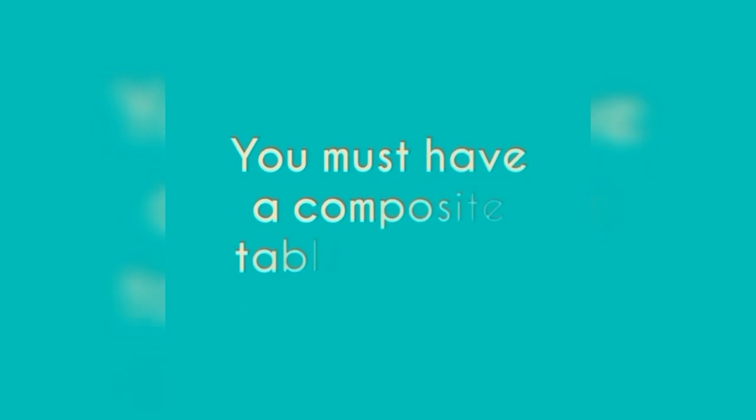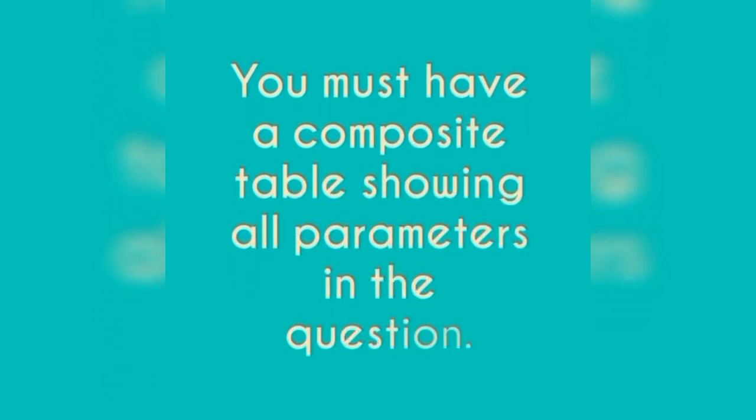So we are going to be sharing tips on what you need to know and do to ensure that you have a successful physics practical. Let's highlight them one after the other. First, your table must be clearly stated, which means you must have a complete table containing all the parameters in the question. For instance, if you are told to find length — if you have length L to be plotted against maybe mass — let that be in your table. Ensure everything is there and in adequate order.